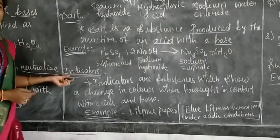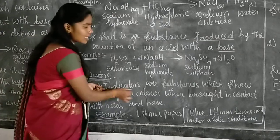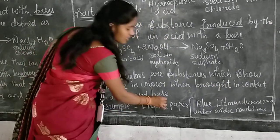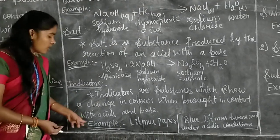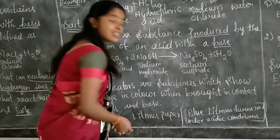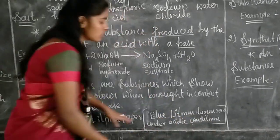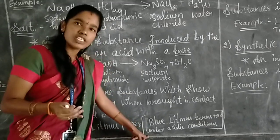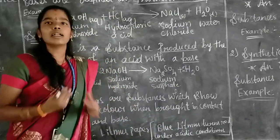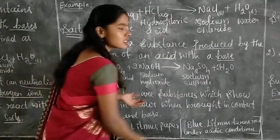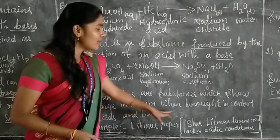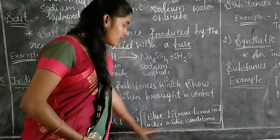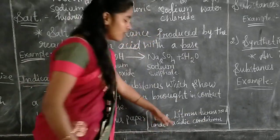Next we come to indicators. The word itself shows that something is indicating. Indicators are substances which show a change in color when brought in contact with acids and bases. For example, litmus paper — blue litmus paper turns red in color if it comes in contact with an acid, under acidic conditions. In the same way, red litmus turns blue under basic conditions.